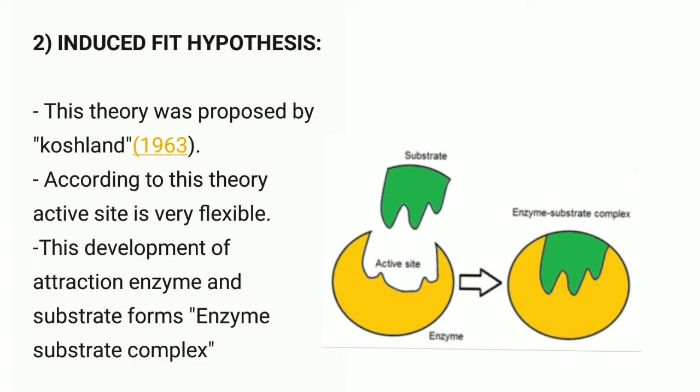According to this theory, the active site is very flexible. The enzyme which contains the active site is flexible, which means when the substrate molecule combines to the enzyme molecule, the active site changes its shape according to the substrate molecule. This development of attraction between enzyme and substrate forms the enzyme-substrate complex.